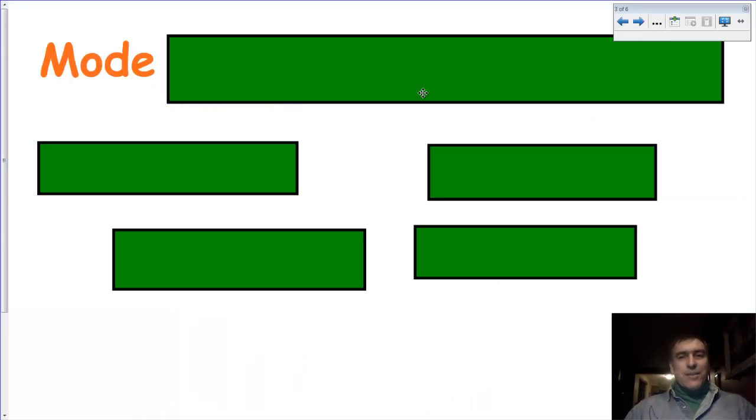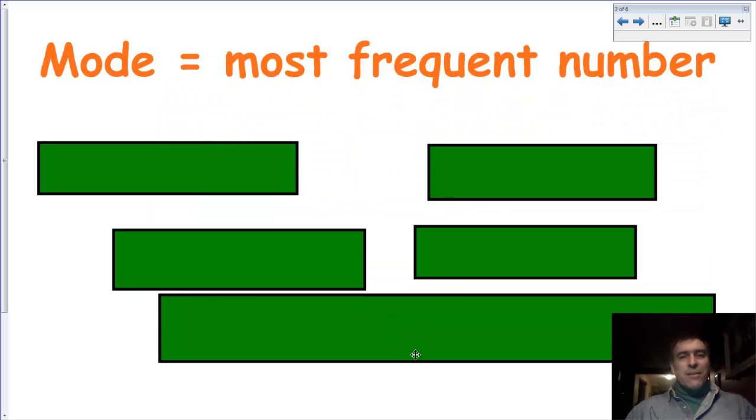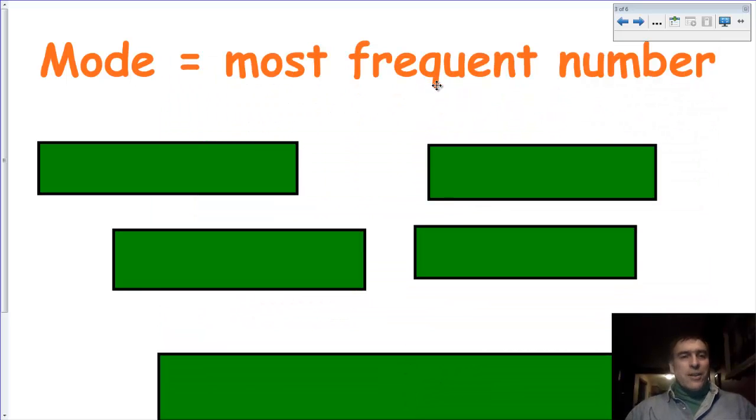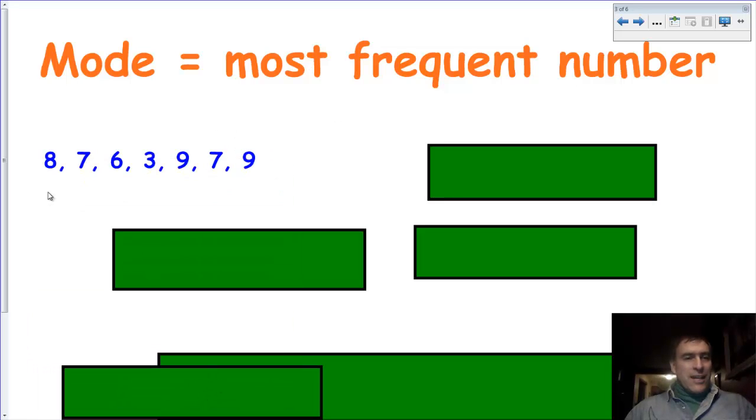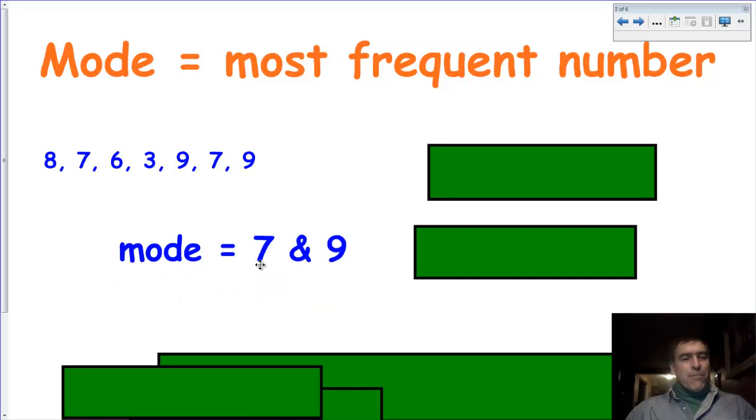The next thing is mode. Well, what is mode? Mode is simply the most frequently used number in the data set. So for example, we're taking a look at our data here. We've got 8, 7, 6, 3, 9, 7, 9. What is the most frequent? Well, I see two 7s. But I also see two 9s. Well, they're tied. Mode is equal to 7 and 9.